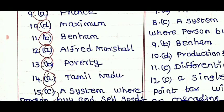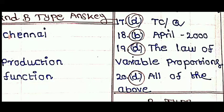13th option B, Poverty. 14th option A, Tamil Nadu April 2000. 15th option D, the law of variable proportions. 20th option D, all of the above.